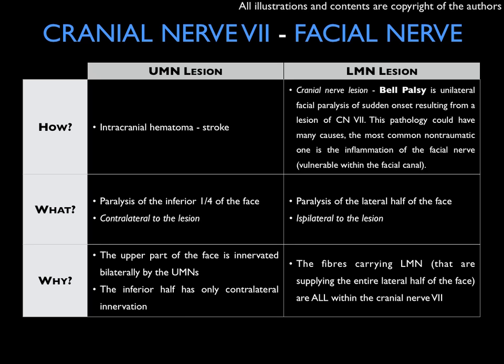So, what are the symptoms that we will see? The upper motoneuron lesion will manifest as a paralysis of the inferior quadrant, quarter of the face, contralateral to the lesion, because there is, of course, the decussation, the crossing over of the motor fibers from the cortex. The lower motoneuron lesion instead would be a paralysis of the lateral half of the face, ipsilateral to the lesion. This is basically what everyone knows.